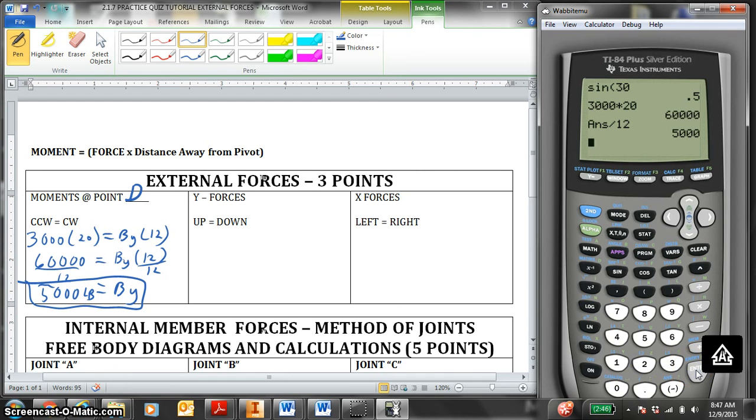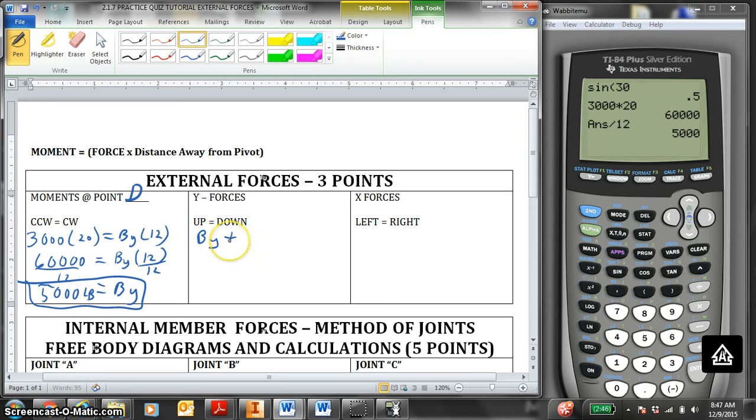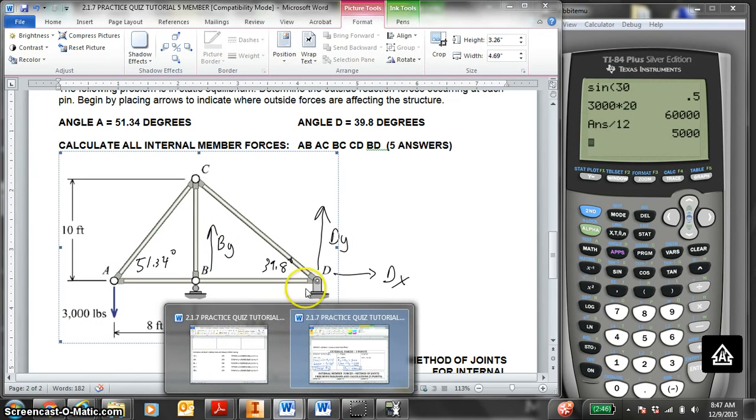Now, we do Y forces. Up arrows equal down. The up arrows are BY plus DY equals what's going down, 3000. We use this BY number here. 5000 plus DY equals 3000. Subtract 5000 from both sides. DY equals negative 2000 LB. So remember, in our original picture, we guessed DY was up. It is actually acting down at 2000.